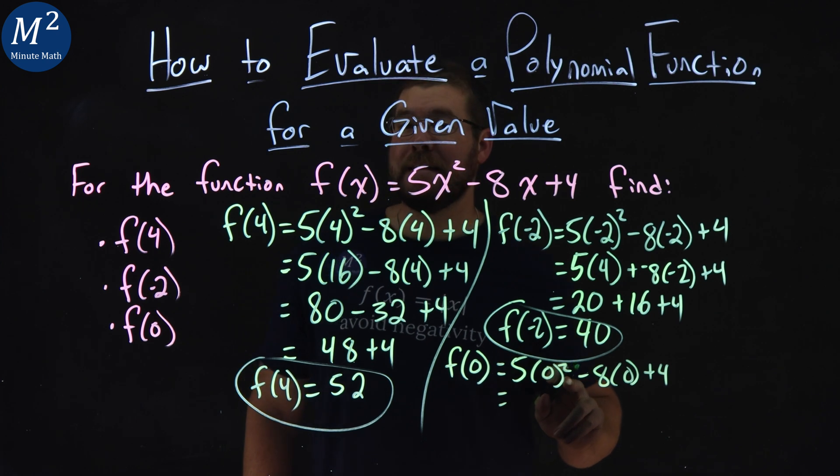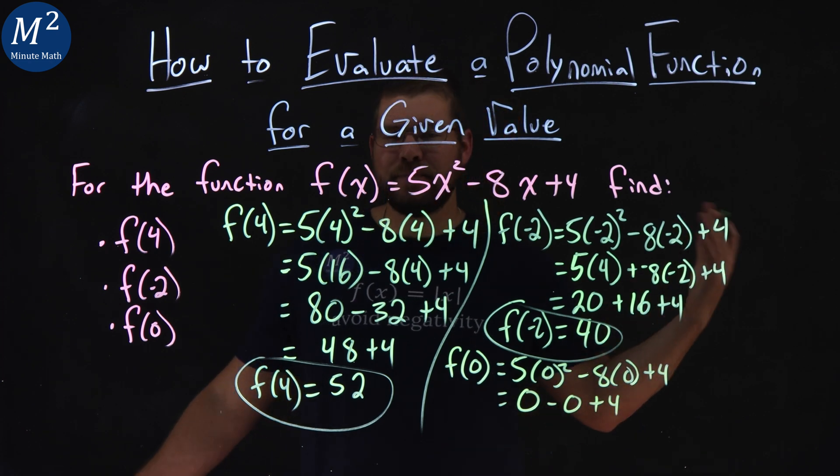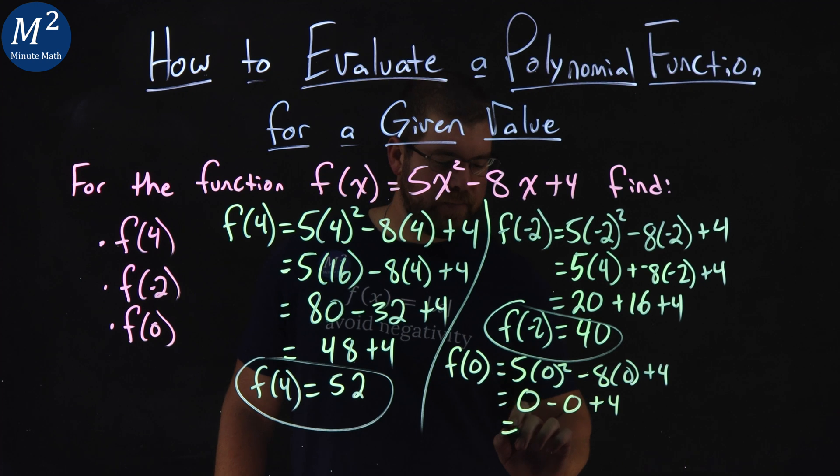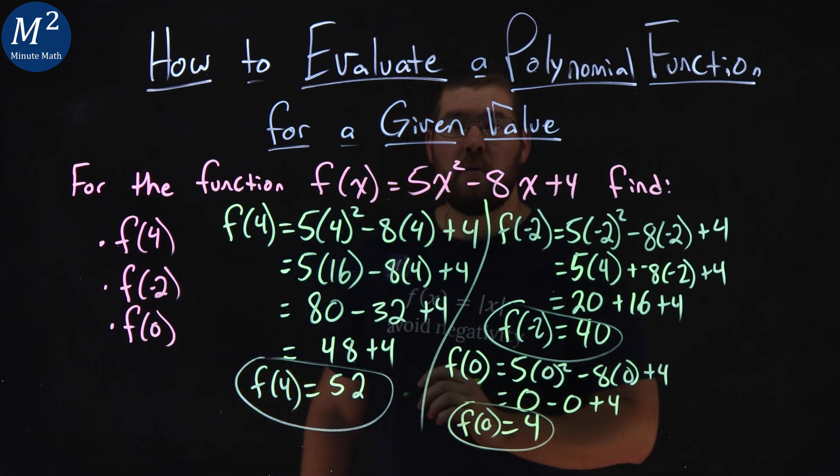0 squared is 0, times 5 is also 0, minus 8 times 0 is 0, plus 4. 0 minus 0, 0, plus 4 is 4. So f(0) comes out to be 4.